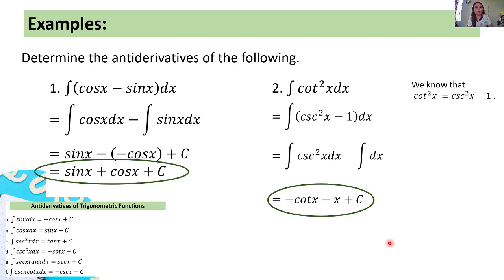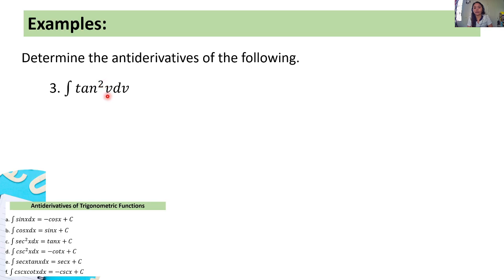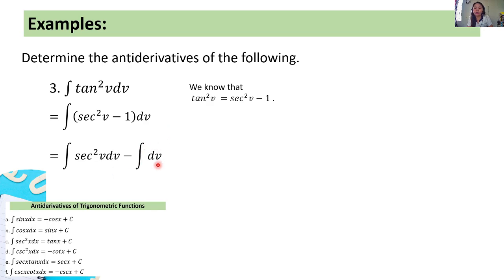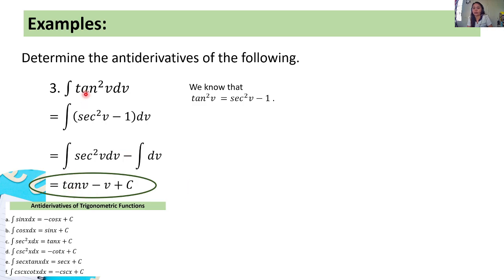Number three: the integral of tangent squared v dv. We know that tangent squared v equals secant squared v minus 1, so we express this as the integral of the quantity of secant squared v minus 1 dv. Separating, we have the integral of secant squared v dv minus the integral of dv. The integral of secant squared v dv equals tangent v plus c, and the integral of dv equals v. So the final answer is tangent v minus v plus c.